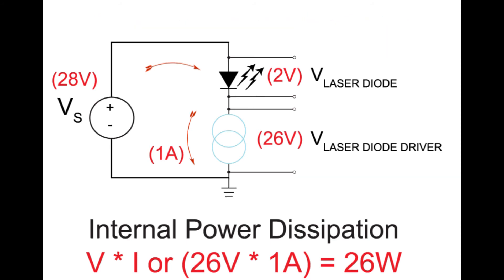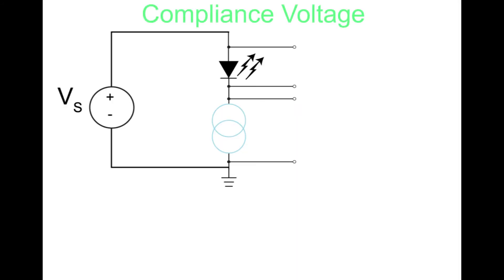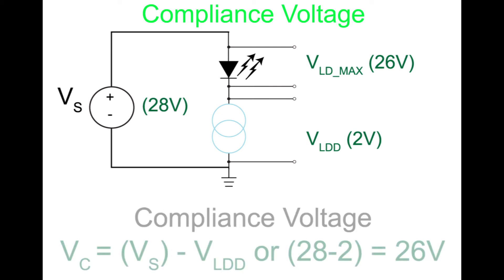Instruments have built-in SOA protection. Compliance voltage is the power supply voltage minus this internal voltage drop across the laser diode driver. It is the maximum voltage that can be delivered to the laser diode. It is typically specified at full current.